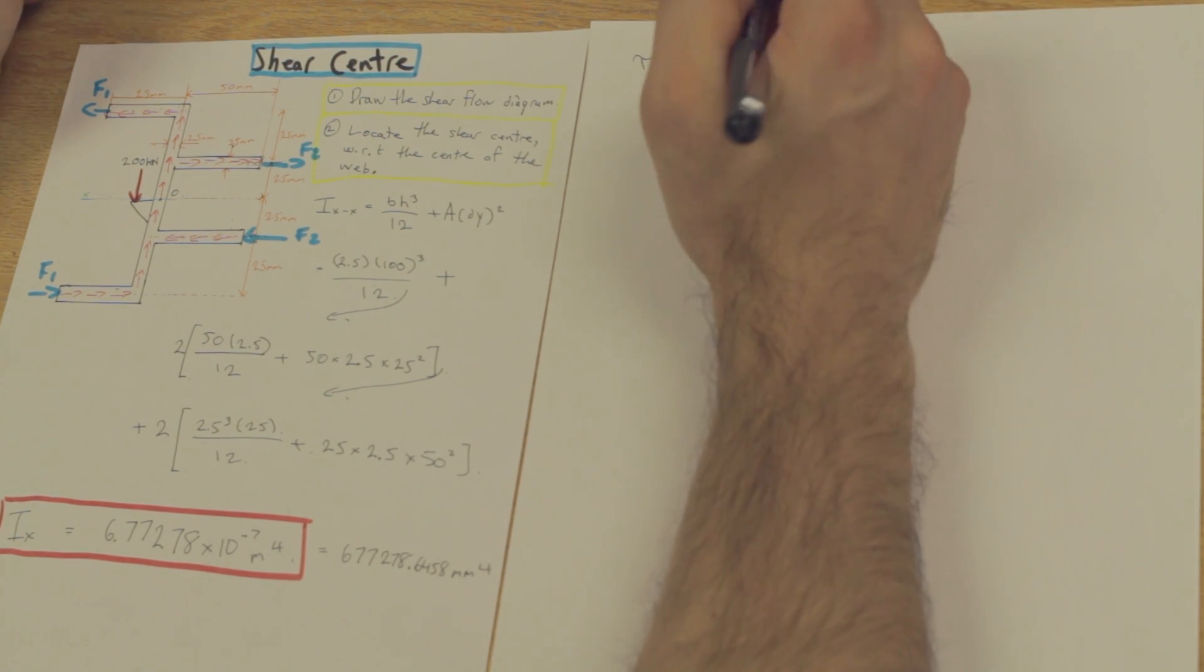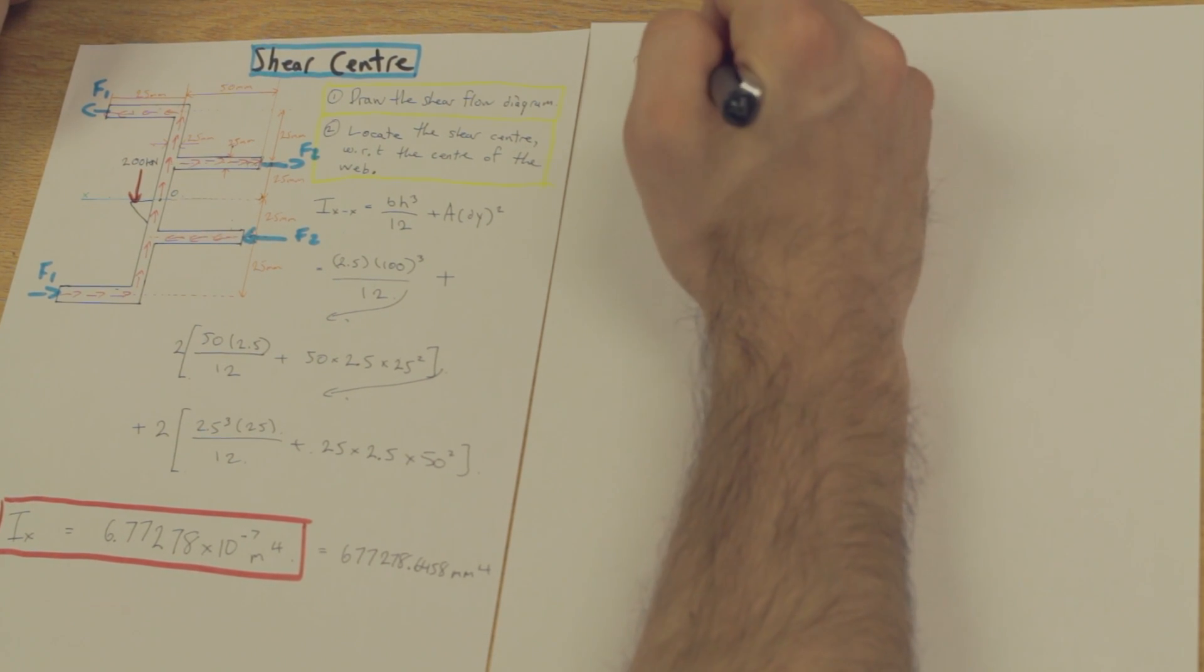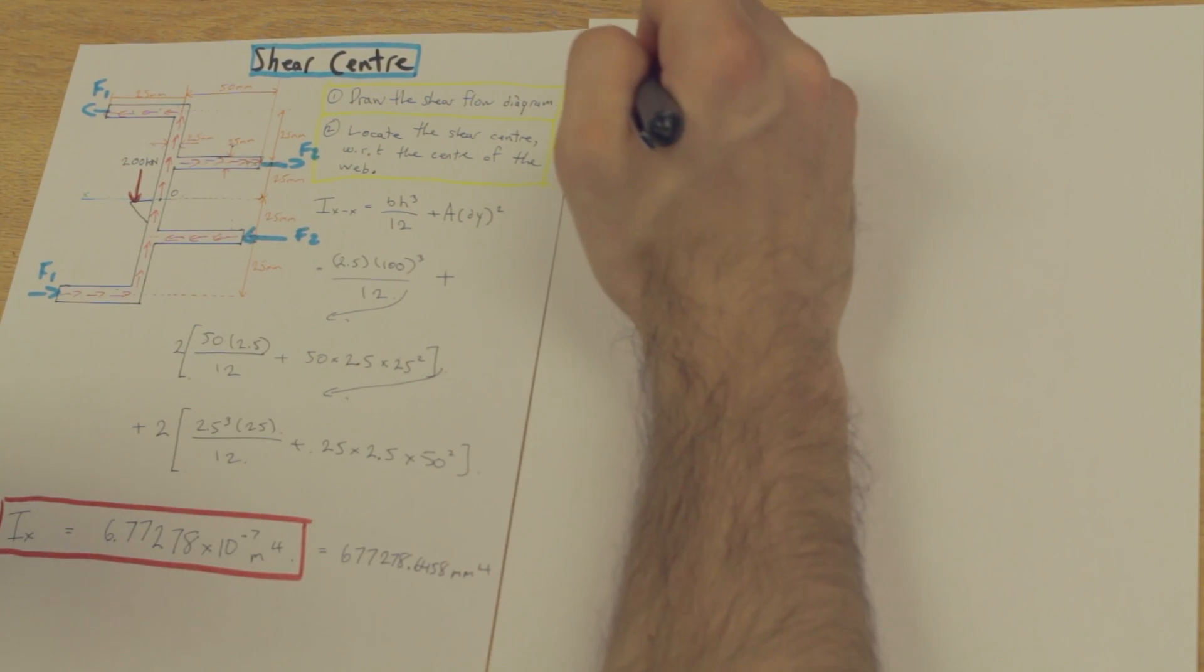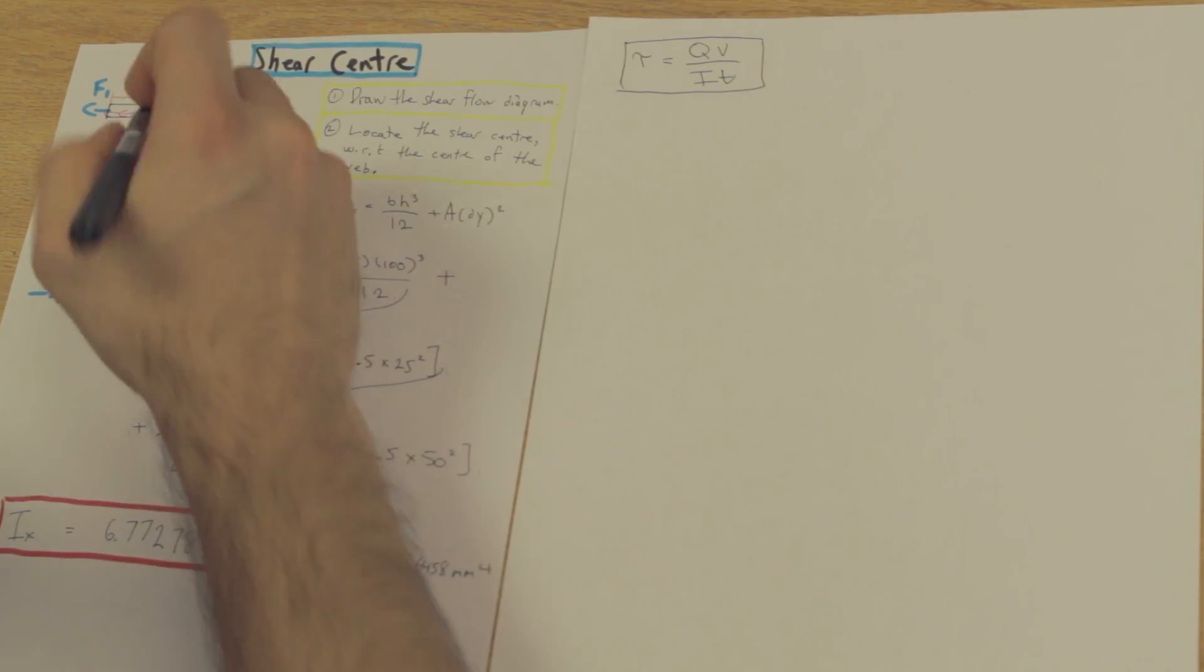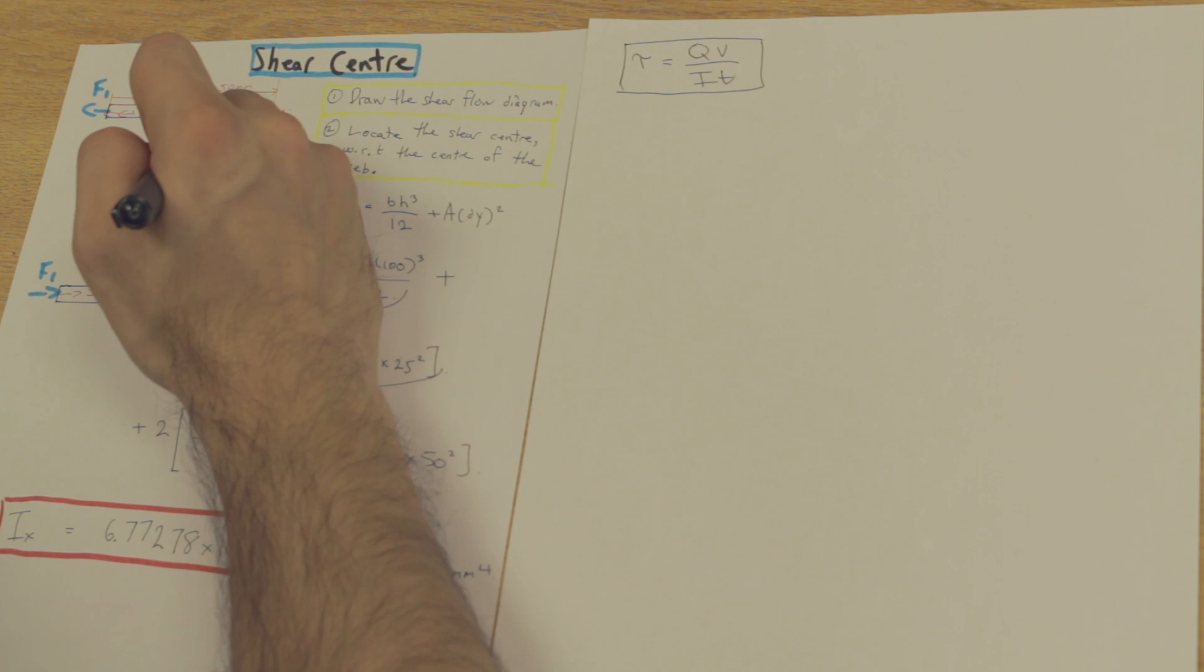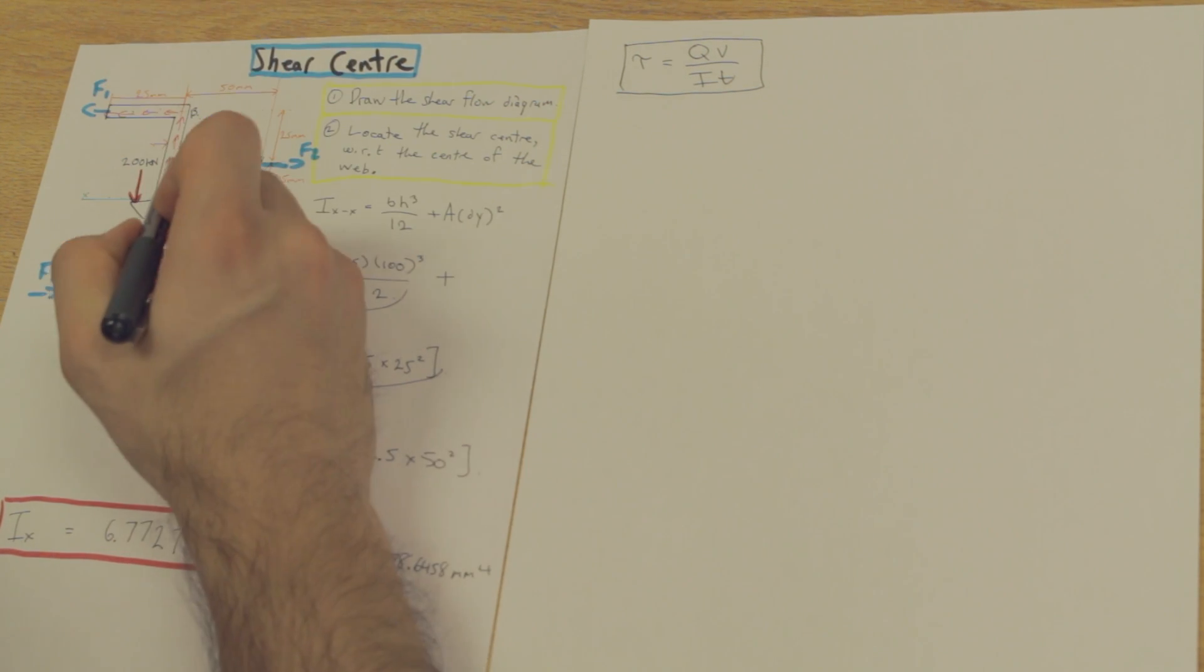So, the formula is QV over IT. This is the formula that we need to use, and I'm going to just label these here for you. We'll say this is point A, and this is point B. So, we want to find the shear stress here and here.